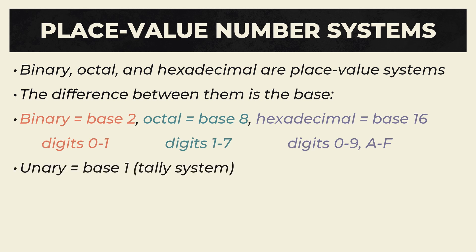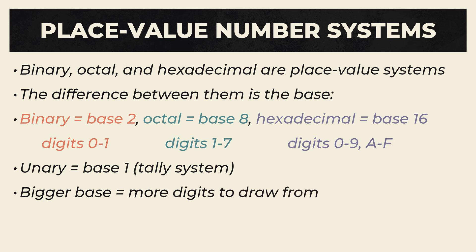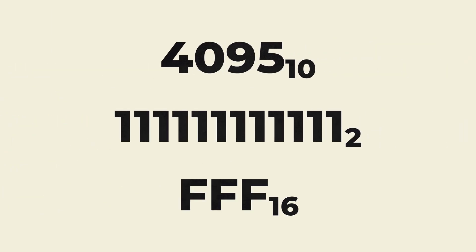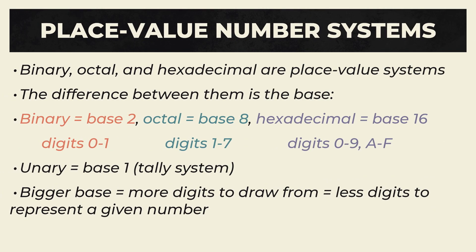I also feel like mentioning that unary, or base 1, is also a place value number system. It only uses one digit, so it's a tally system. The number of digits in a number is the number. Now, for any given place value number system, as the base gets bigger, the library of digits it can draw from also gets bigger. However, the number of digits that it takes to represent a given number goes down. For example, in binary it takes 12 digits to represent the number 4095, while it only takes 3 in hexadecimal. However, the disadvantage of using hexadecimal is that there's a lot of digits that you can use to represent a number, and you have to remember them all.